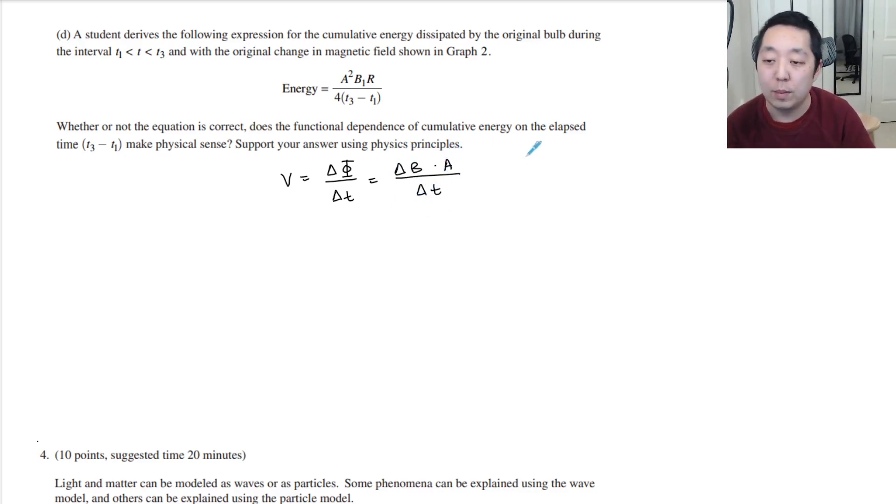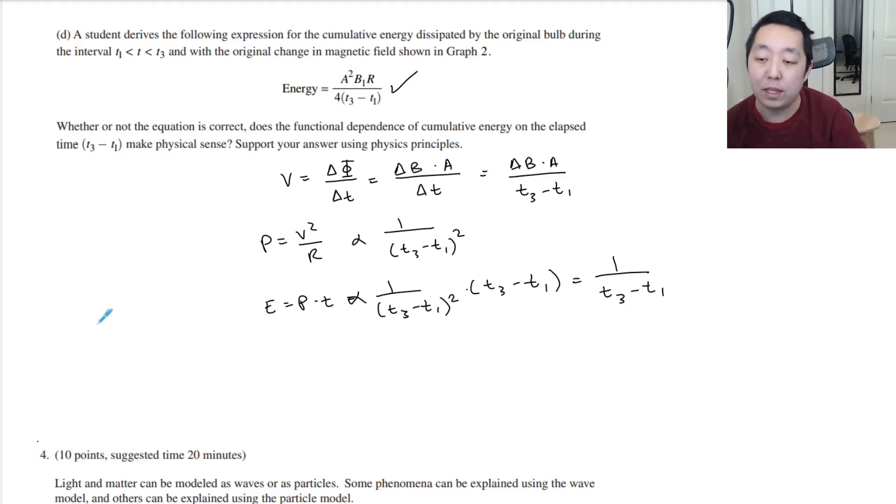Power is V squared over R, so it has a dependency of one over (t3 minus t1) squared. But energy is power times the elapsed time. The power has dependency (t3 minus t1) squared and the time has dependency (t3 minus t1), that results in a dependency of one over (t3 minus t1). That matches the dependency there, so yes, it makes physical sense. I would expect the dependencies to be inversely related to time, so this would be a correct relationship.